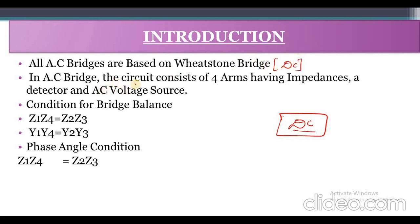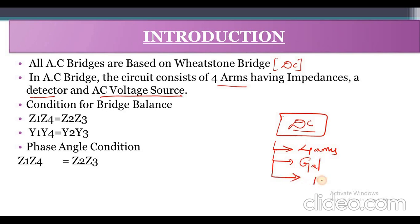In AC Bridges, the circuit consists of four arms having four impedances. It also consists of a detector and an AC voltage source. In case of DC Bridges, we have a galvanometer and a DC voltage source. The condition for bridge balancing in AC Bridges is Z1·Z4 = Z2·Z3.